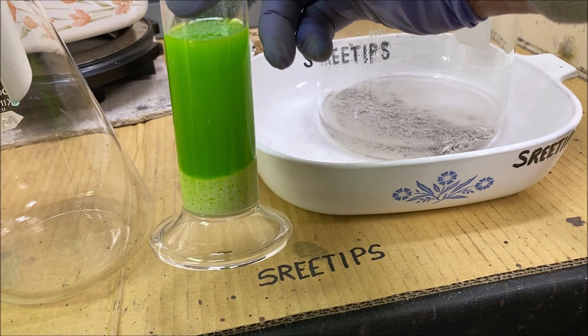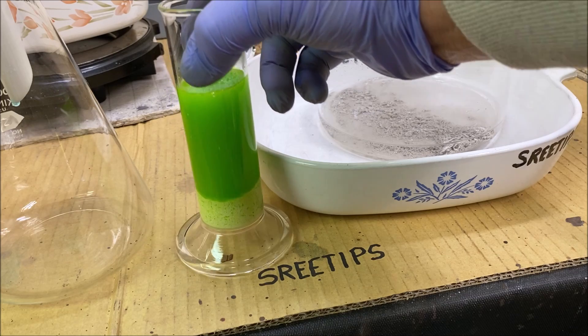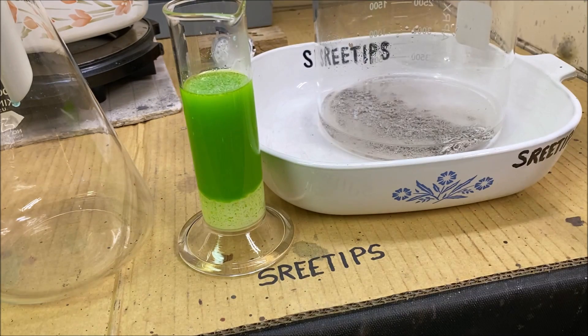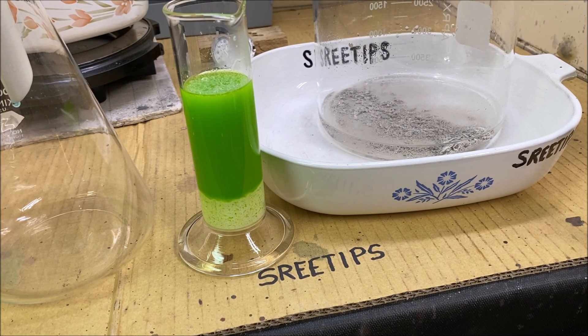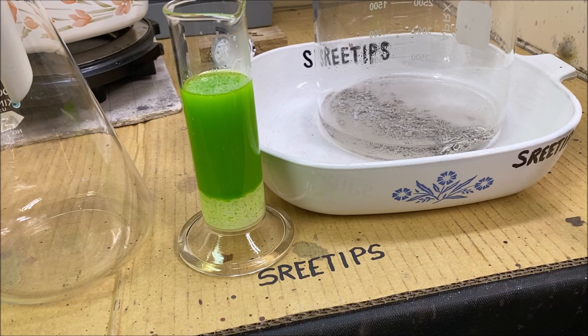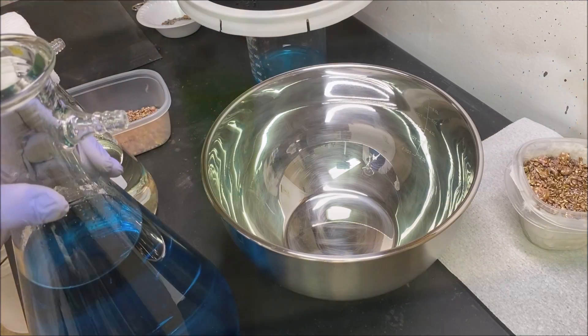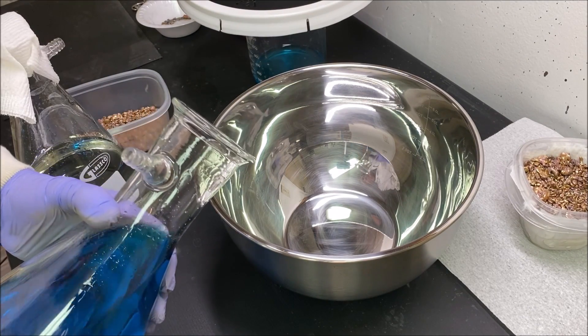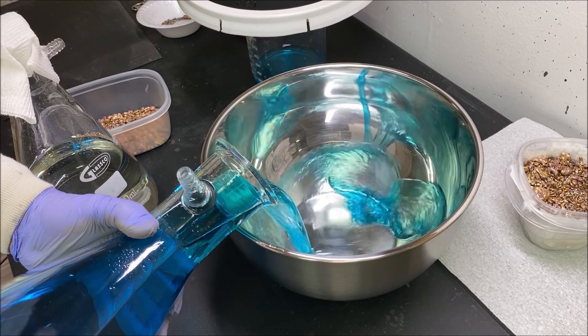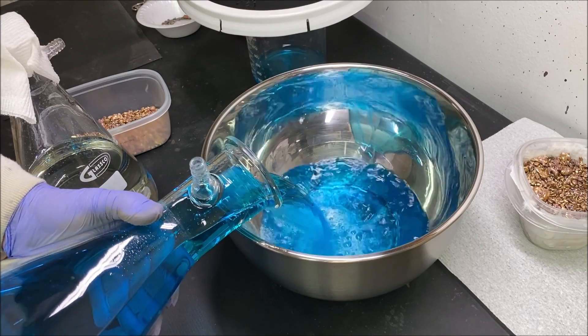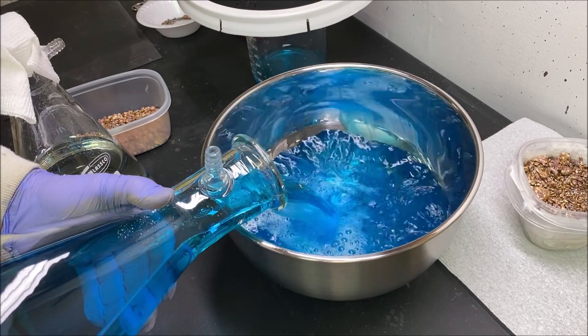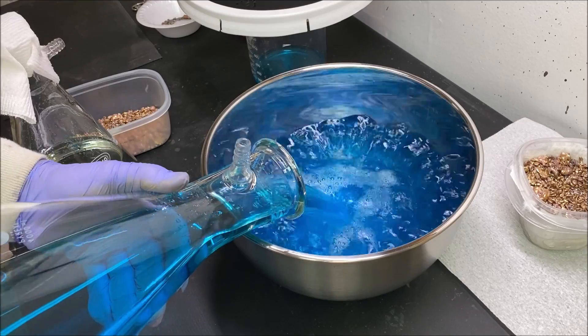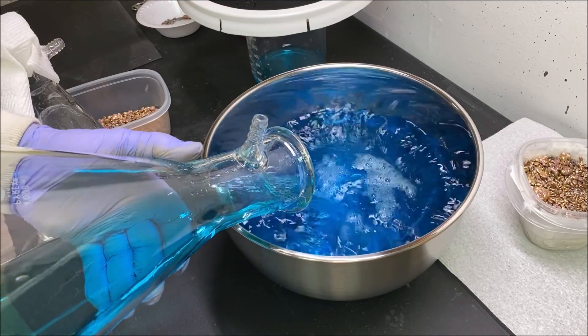Here we go, we're going to pour in the used electrolyte from the previous silver cell run. This will have copper in it, but that's okay because we're going to dilute it down a little bit. Copper, I've been told, actually improves crystal structure and rigidity and growth.